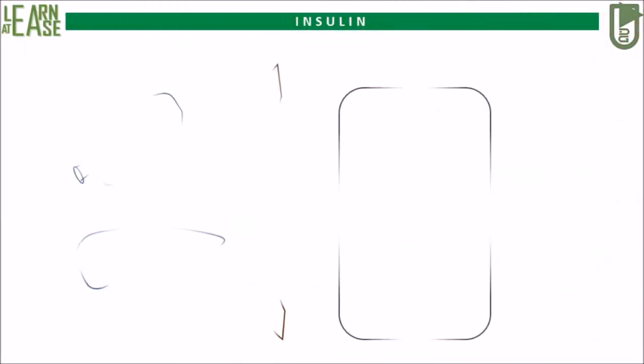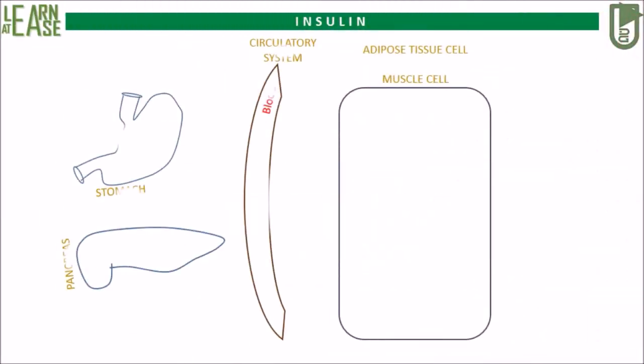Essential organs of the body required to understand the production of insulin and its function include the stomach, pancreas, circulatory system, and target tissue. In this case, adipose tissue cell or muscle cell is considered as the target tissue for this example. The target cell shown in this example has a glucose transporter 4, abbreviated as GLUT4, located in the cytoplasm.